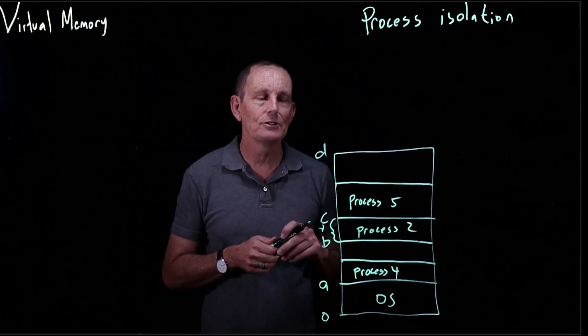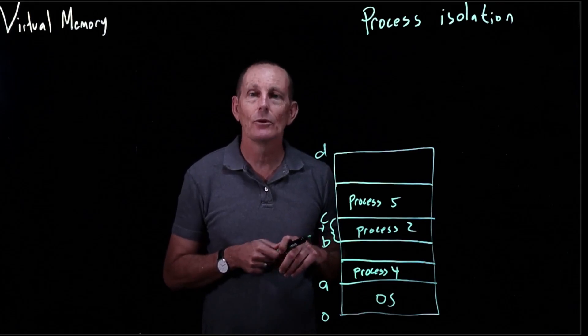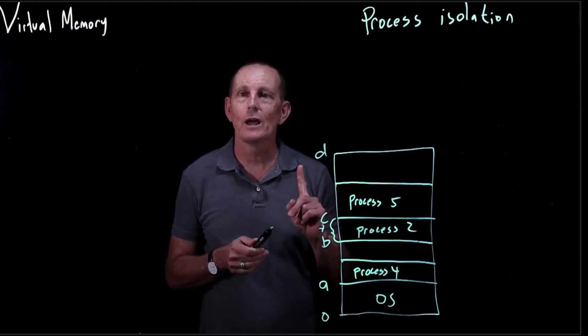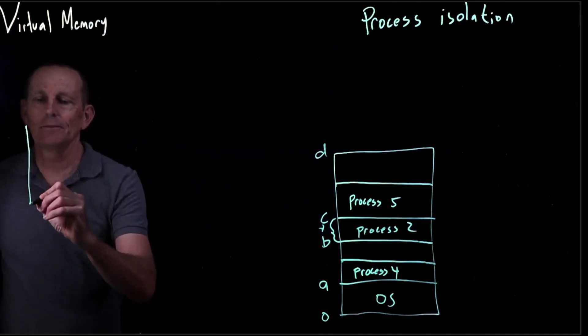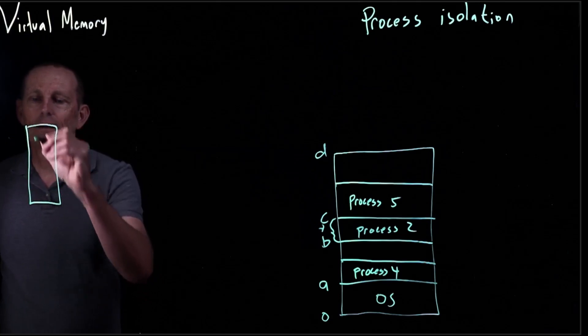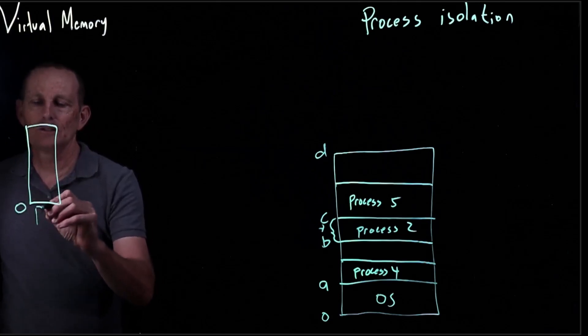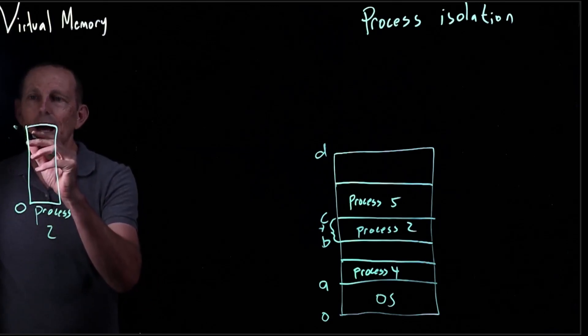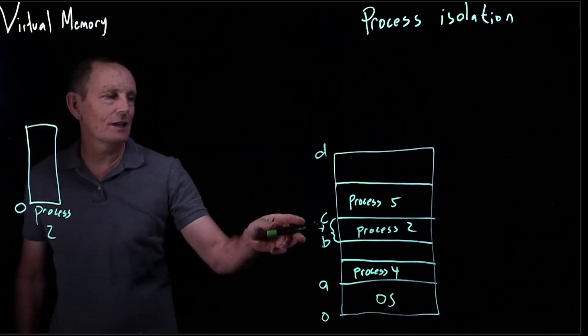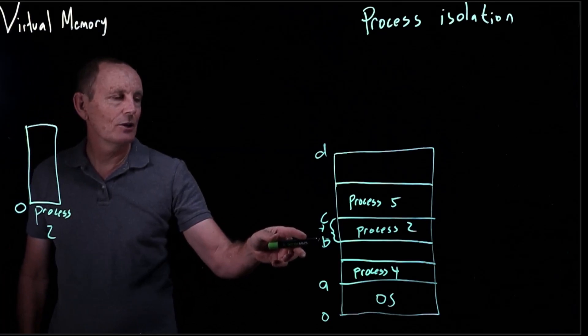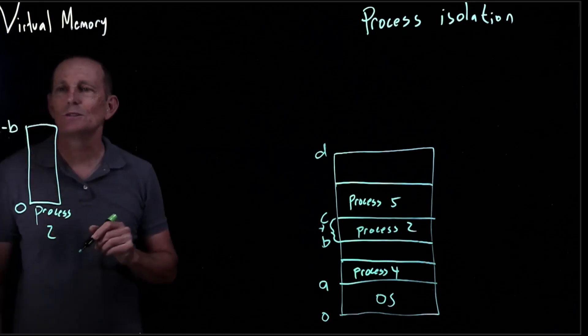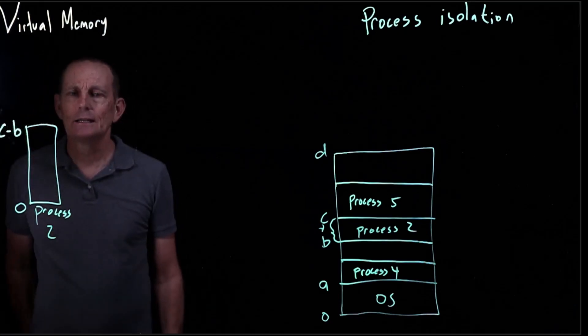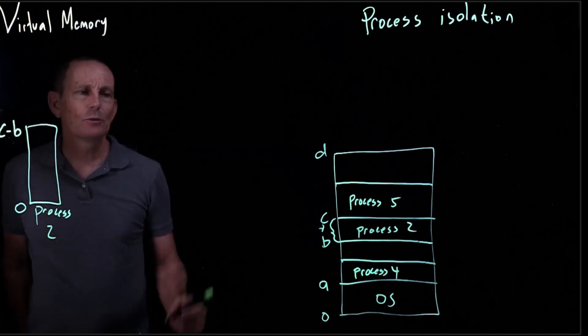But for hardware, what we want to do is something like we saw with the relocation register. We're going to add one more register. So we've got a process, let's say it is process two. We actually know its size here. We know it went from B to C, so its size is actually C minus B.